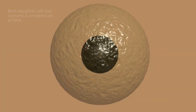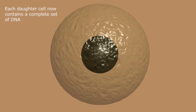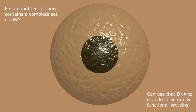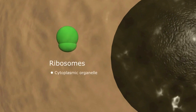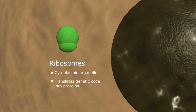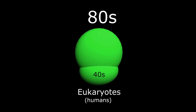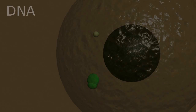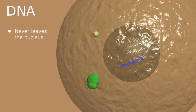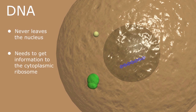With each daughter now complete with its full complement of DNA, it needs to start producing structural and enzymatic proteins to carry out its assigned duties and contribute to the functional activity of that particular organ or part of the body. This is done through ribosomes, an organelle in the cell's cytoplasm that can read genetic material and translate that code into the necessary proteins. All ribosomes consist of two subunits — humans have 80S ribosomes consisting of a 40S and a larger 60S subunit. Our DNA never leaves the protection of the nucleus, but the information it contains needs to get into the cytoplasm where the ribosomes reside for translation into proteins.